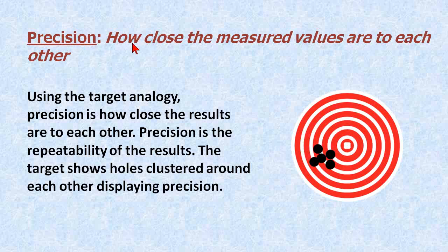Precision, on the other hand, is how close the measured values are to each other. Here we have five holes clustered around each other, representing precision, in contrast to accuracy, which is the desired value of the center of the target.